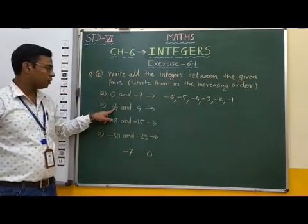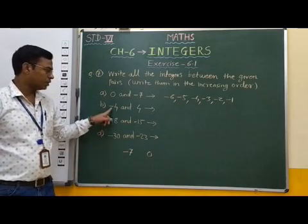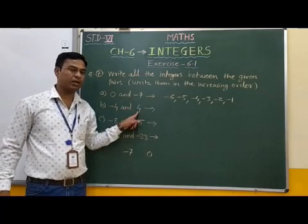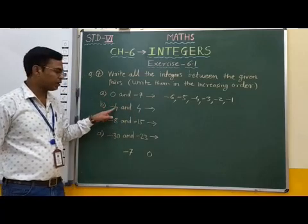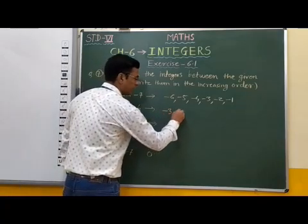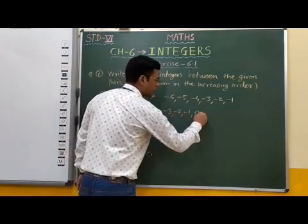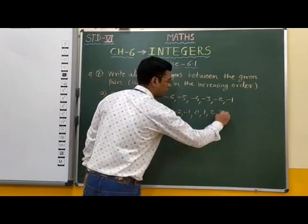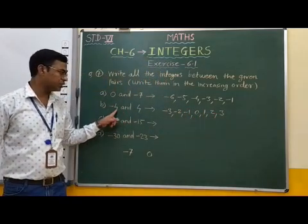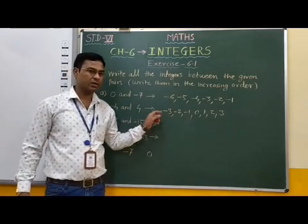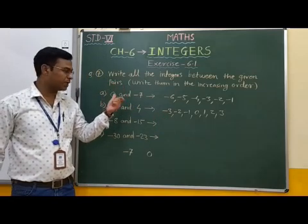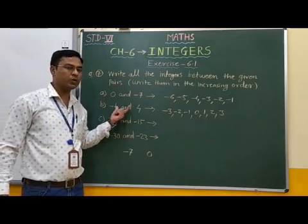Now, minus 4 and 4: minus 4 is smaller and 4 is greater. Therefore, the integers between minus 4 and 4 are: minus 3, minus 2, minus 1, 0, 1, 2, 3. We cannot include the two given numbers in the answer because we have to write integers between these two integers.